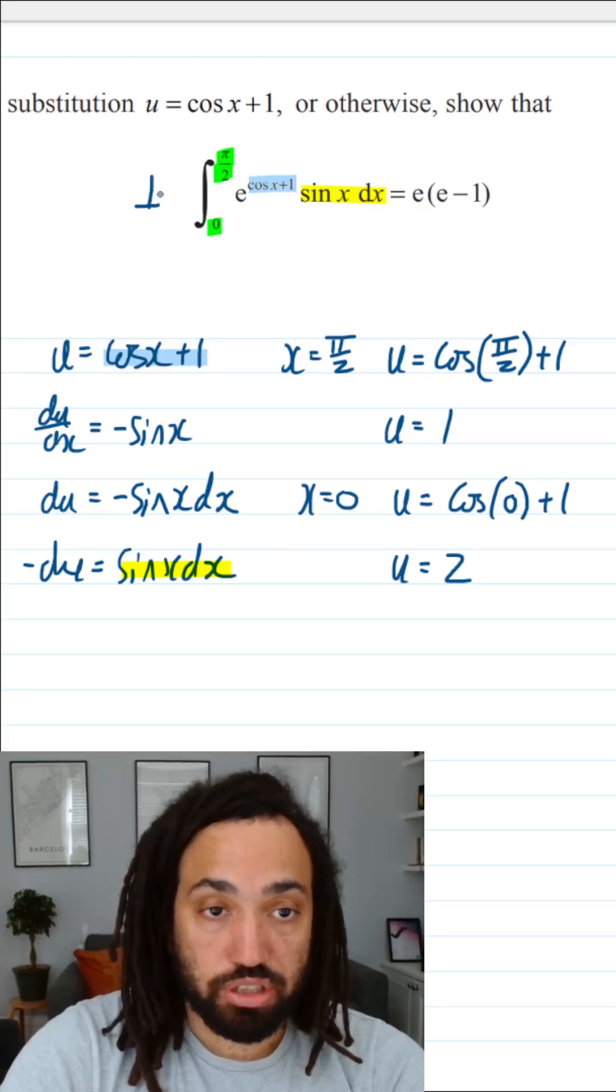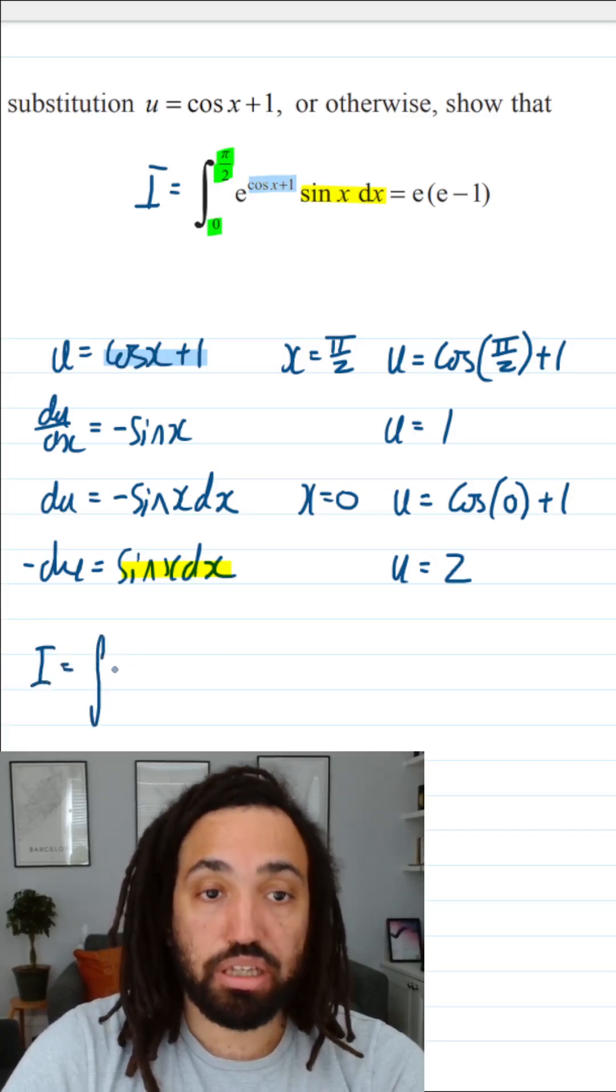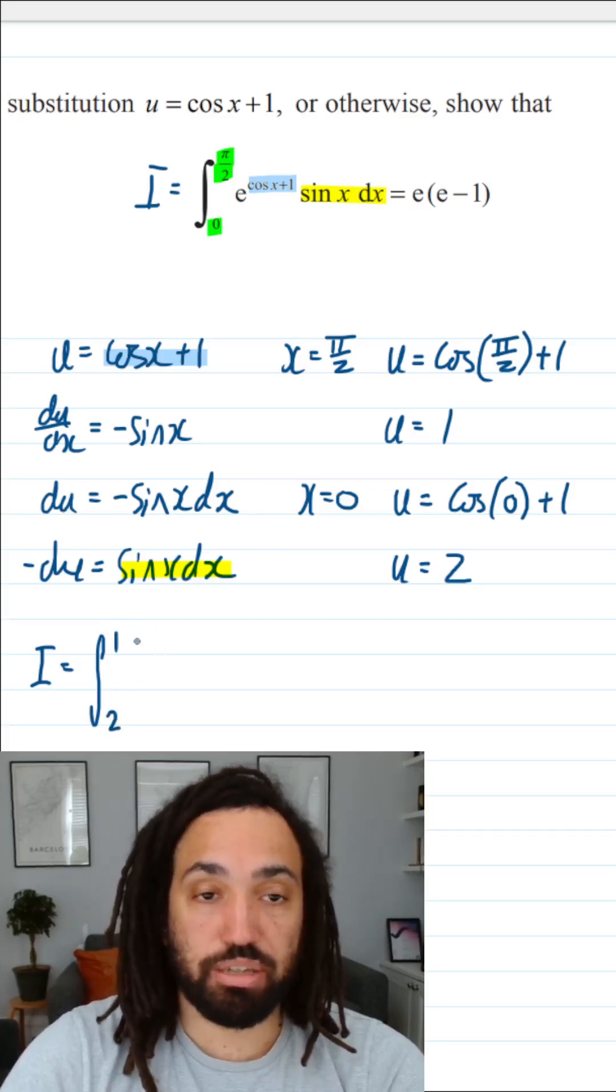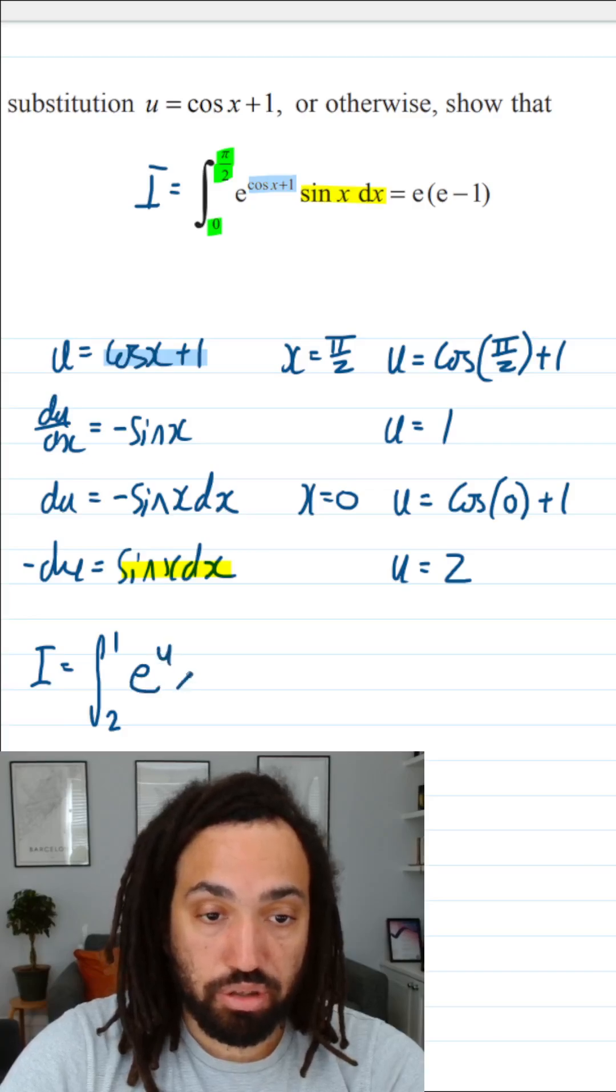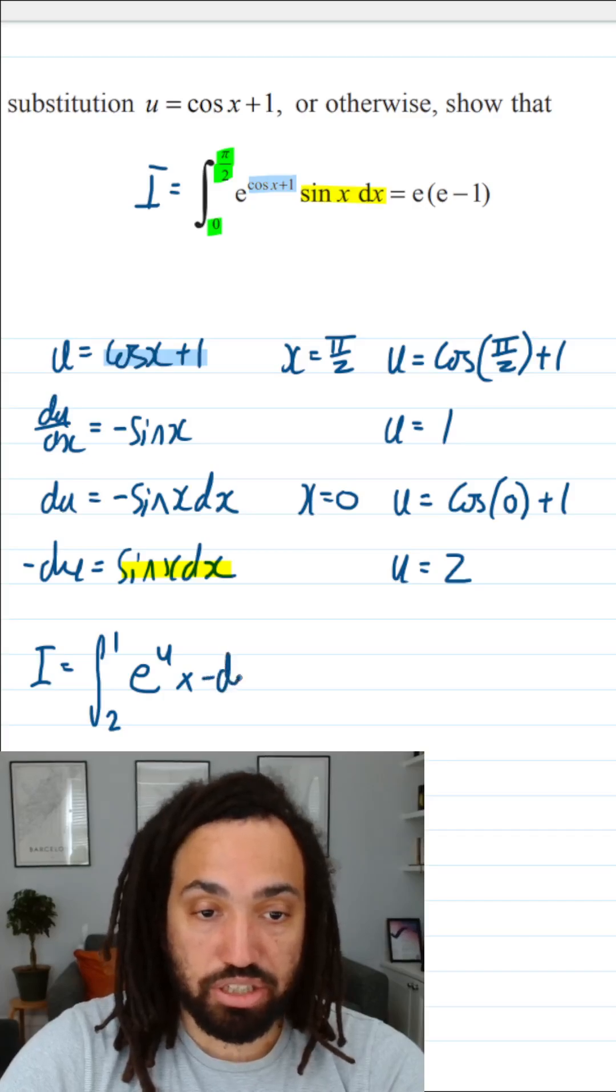OK, so we're going to call that i. We're going to say i equals the integral between 1 and 2, those are the limits, e to the u multiplied by, and the sin x dx is minus du.